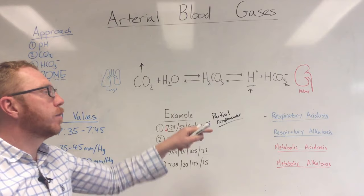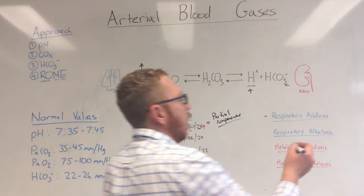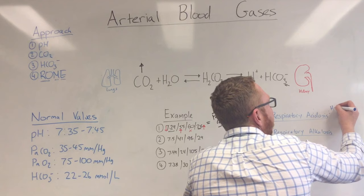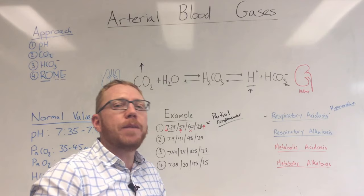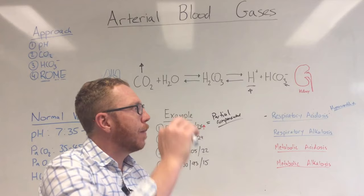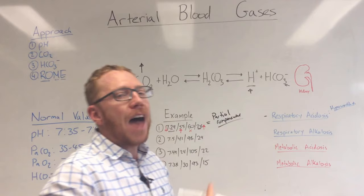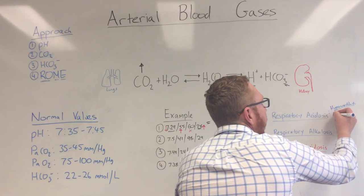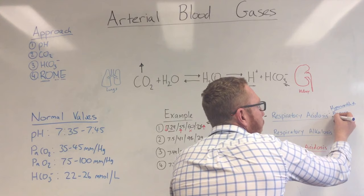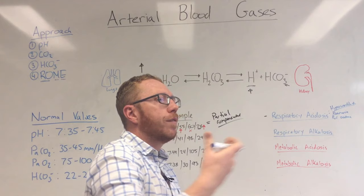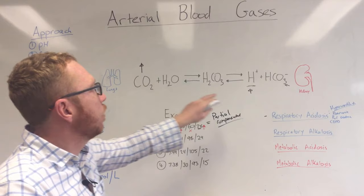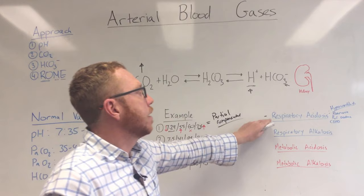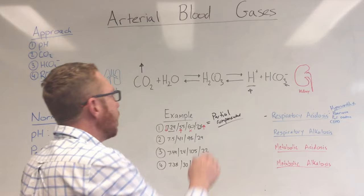What causes respiratory acidosis? A major cause is hypoventilation — not getting rid of enough CO2. This could be due to sedatives or opiates slowing your respiratory drive, intrinsic lung issues like pneumonia or pulmonary oedema changing gas exchange, or obstructive issues like COPD or asthma causing air trapping. All these increase CO2, which ultimately increases hydrogen ions, leading to acidosis. In this case, the kidney is partially compensating.